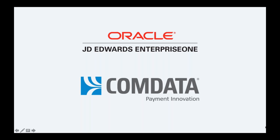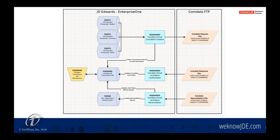One thing I wanted to cover quickly is to describe what this integration looks like, so that anyone on the call can relate what CommData provides to their current JD Edwards environment. This is more of a technical diagram of the integration — something we've built that can plug into your existing JD Edwards system. It interacts directly with the accounts payable process, so there are no modifications required to AP. It just requires a different payment instrument to designate that the payment type is going to go to the CommData virtual card file needed to send that initial request.